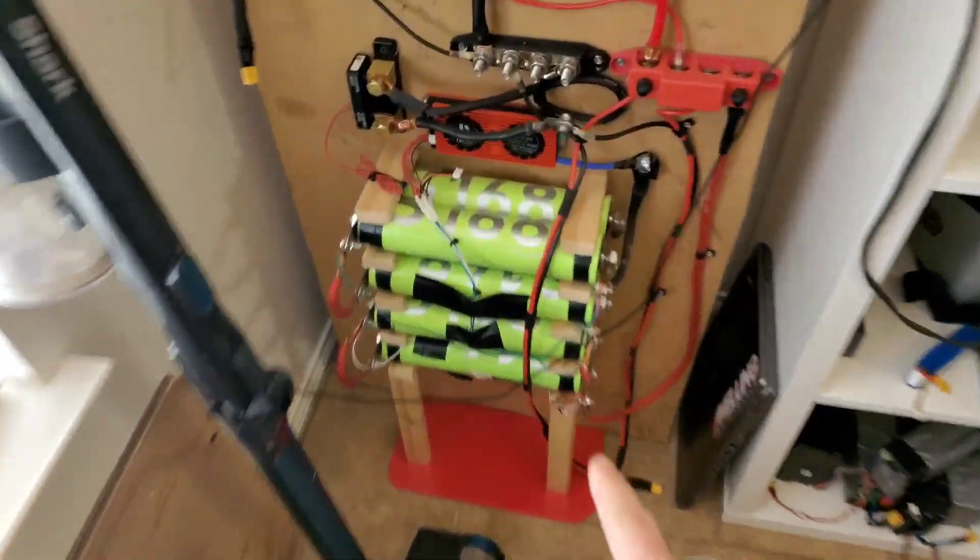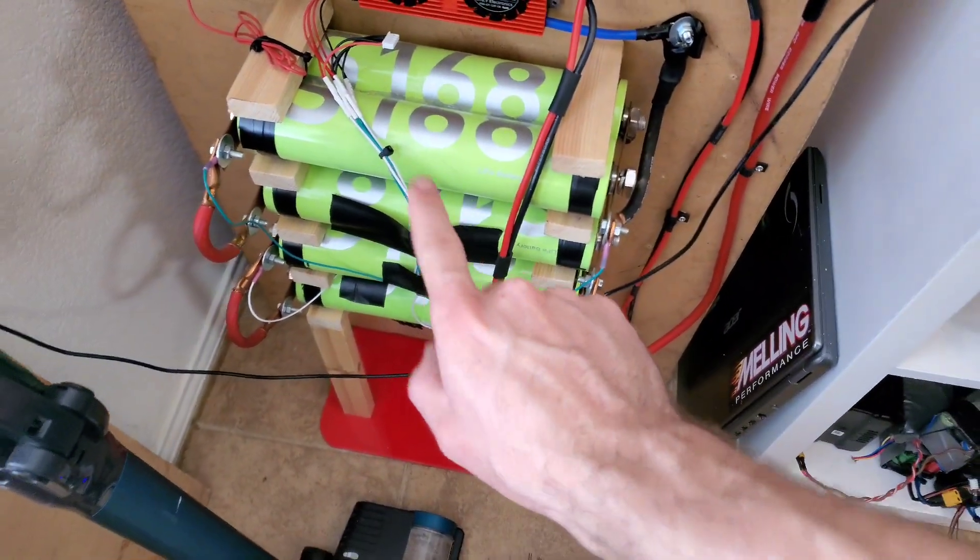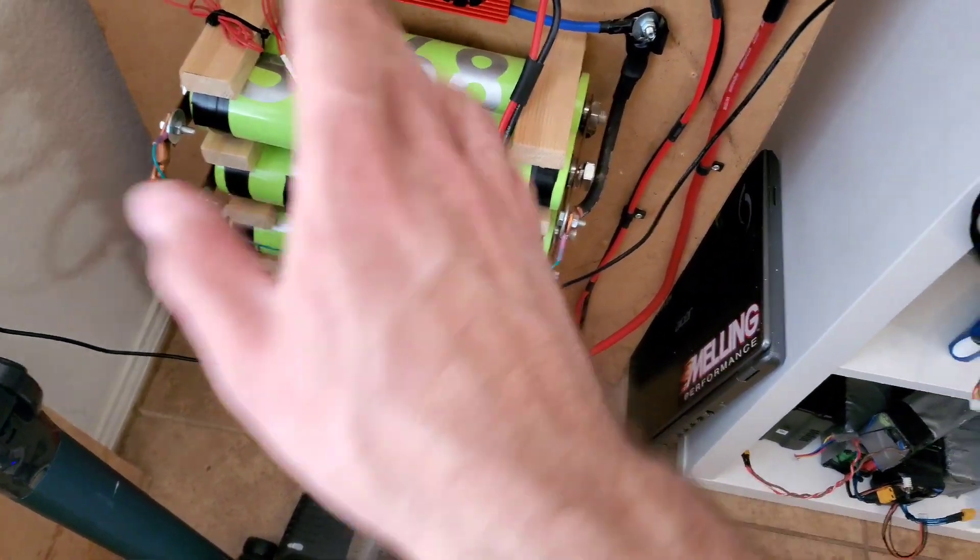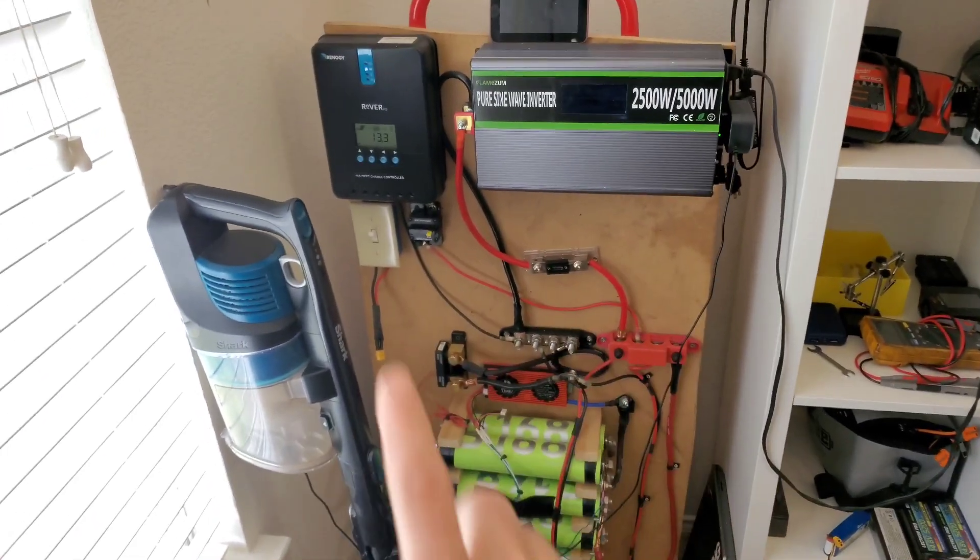Right now I currently have these big cylindrical cells. These are 55 each, so this battery is a 4s2p and this is 110 amp hours. We're going to have 110 plus 150, and then this is going to be hooked to this system. This is like my solar generator thing.